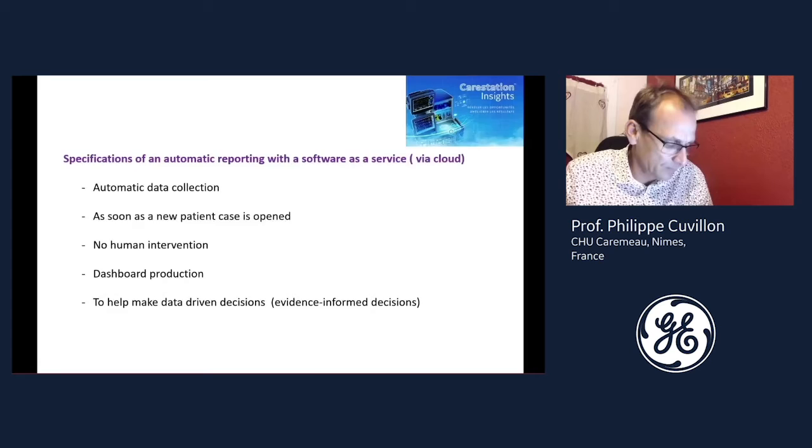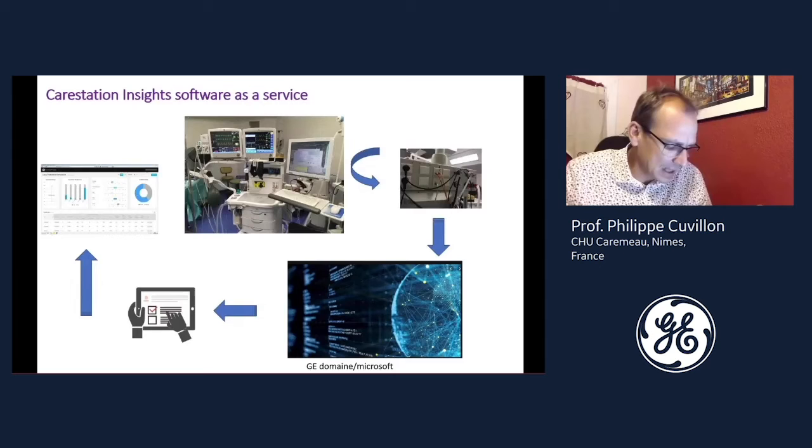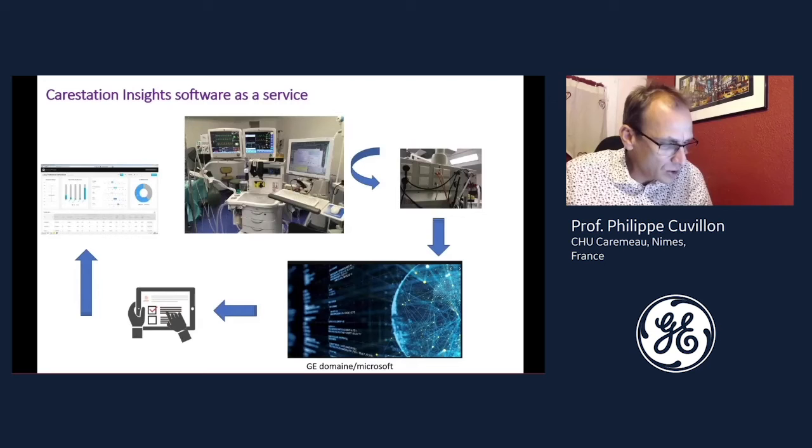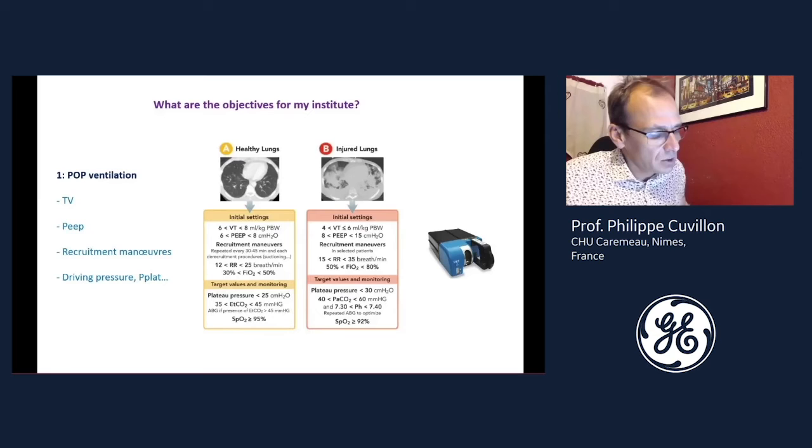In practice, the anesthesia care station is connected to the network via an RJ45 circuit, and all the raw data are transmitted to a cloud-specific domain where they are structured and analyzed to produce tabular data and graphic presentations.